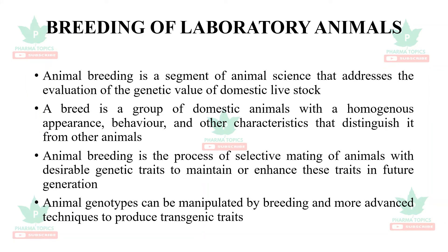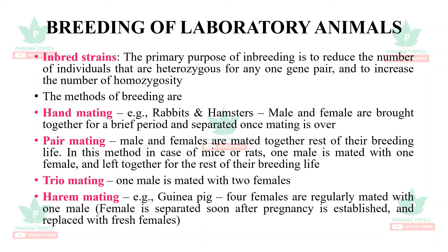Animal breeding is a segment of animal science that addresses the evaluation of genetic value of domestic livestock. A breed is a group of domestic animals with homogeneous appearance, behavior, and other characteristics. Animal breeding is the process of selective mating of animals with desirable genetic traits to maintain or enhance those traits in future generations. Animal genotypes can also be manipulated by more advanced techniques to produce transgenic traits. Inbred strains are used primarily to reduce heterozygosity and increase homozygosity.